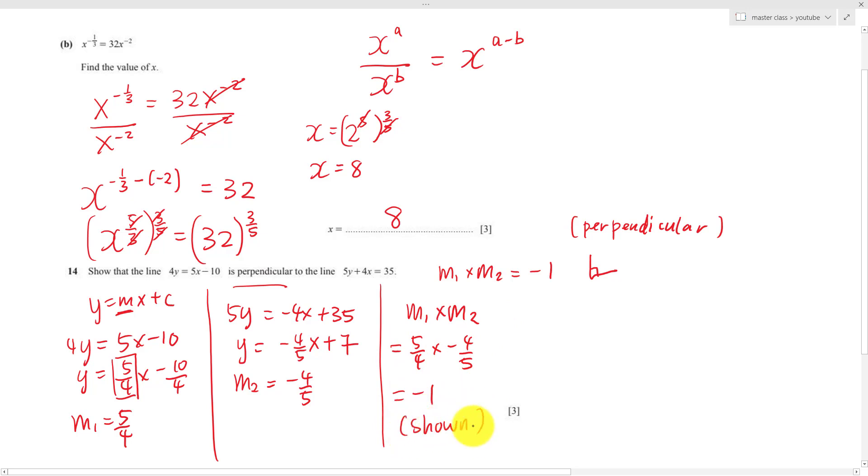This is how I show they are perpendicular. If they are not perpendicular, both gradients multiply will not get negative 1. You will get any other number like 2, like 1, any other number which is not negative 1. But if both gradients multiply to get negative 1, definitely they are 90 degrees to each other.